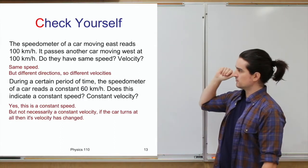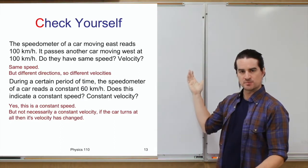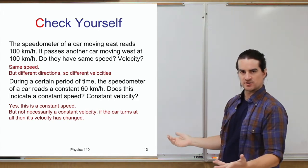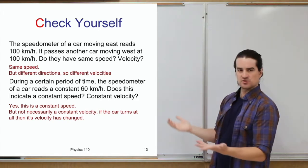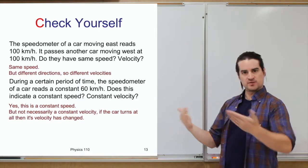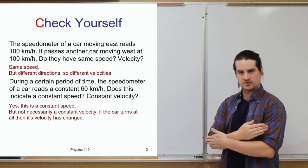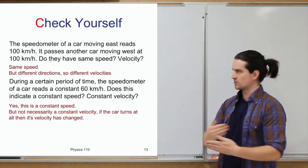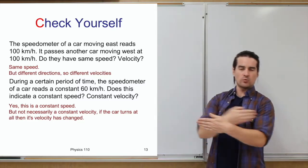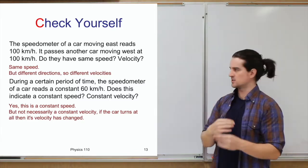For the first question: both cars are moving at 100 kilometers per hour, so the speeds are the same. However, the velocities are different because they're moving in opposite directions — 100 kilometers per hour east versus 100 kilometers per hour west. Different directions, different velocities.